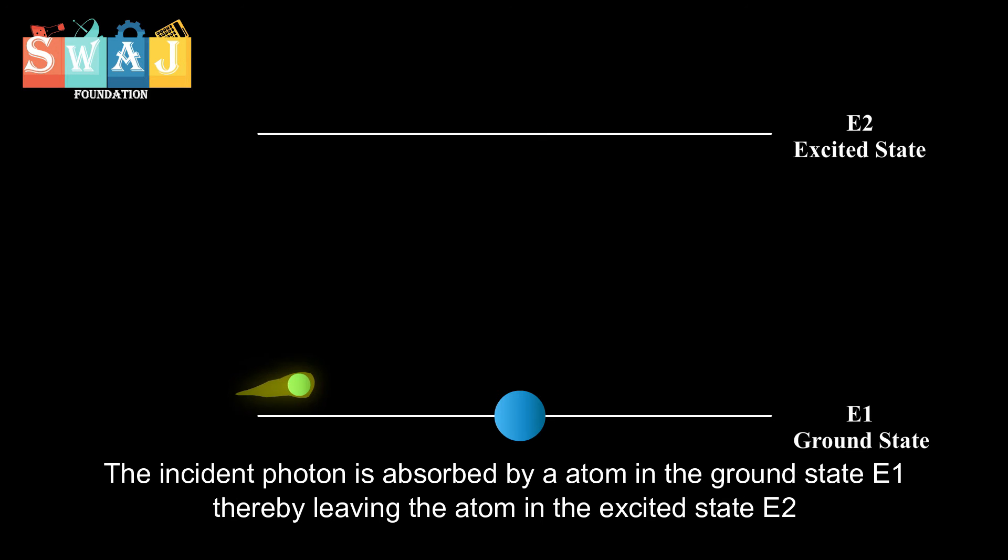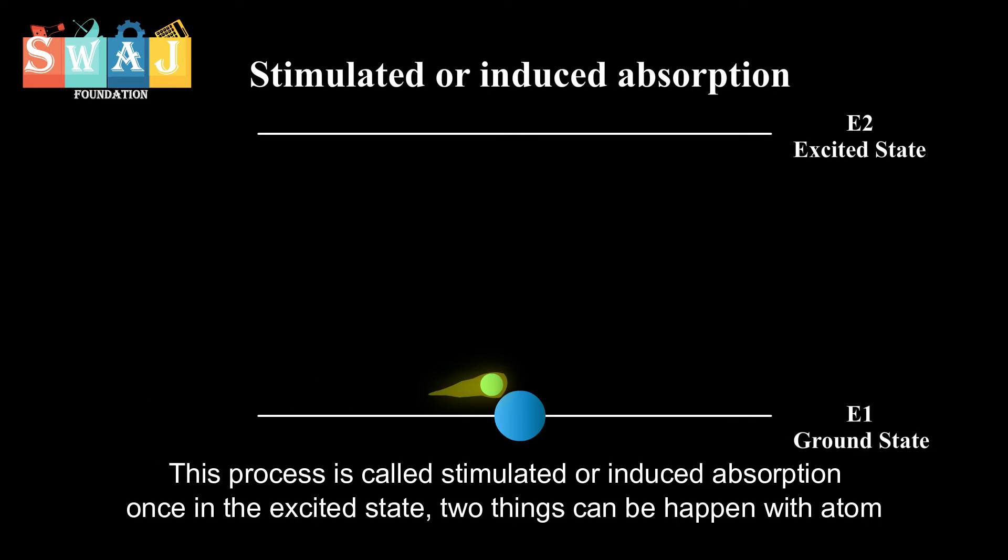The incident photon is absorbed by an atom in the ground state E1, thereby leaving the atom in the excited state E2. This process is called stimulated or induced absorption.